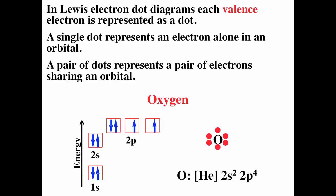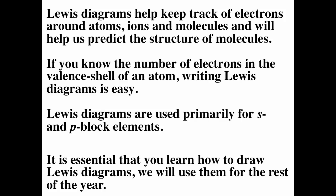We've learned that Lewis electron dot diagrams represent the valence electrons. Lewis electron dot diagrams are just about the valence electrons. The electron configuration for oxygen is 1s2, 2s2, 2p4. The valence electrons are the outer shell electrons — the ones with the bigger n — so for oxygen that would be the second shell, giving oxygen six valence electrons. Each side of the diagram represents an orbital, with two orbitals having two electrons and two orbitals having a single electron. Lewis diagrams help us keep track of electrons — which ones are bonding and which ones are lone pairs.